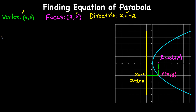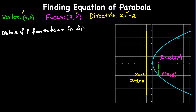The property of the parabola we are going to use is: the distance of point P from the focus is equal to its distance from the directrix. These two distances are equal.